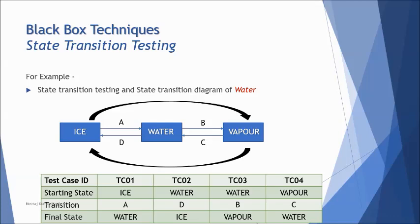It would generally include the starting state, the transition which takes it to the next state. So ice to water and the transition is A, water to ice is D, water to vapor is B, and vapor to water is C.